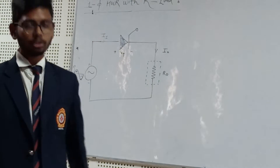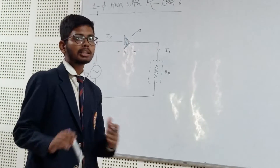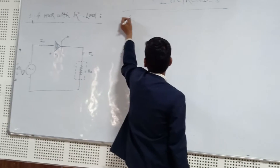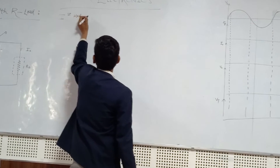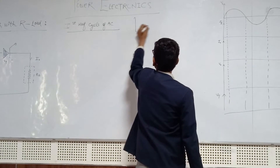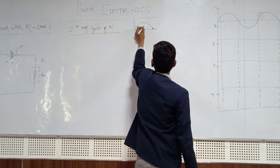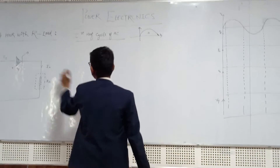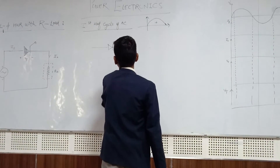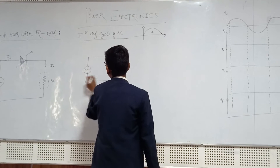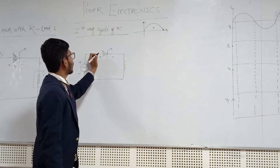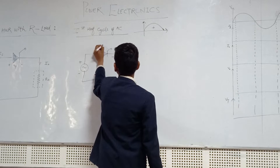Now I will talk about the whole analysis. Let's see what happens here. I will consider the first half cycle — the positive half cycle. During the positive half, you can see the thyristor will be in forward conduction mode because the anode is positive and cathode is negative. Here the thyristor will act as a short circuit.